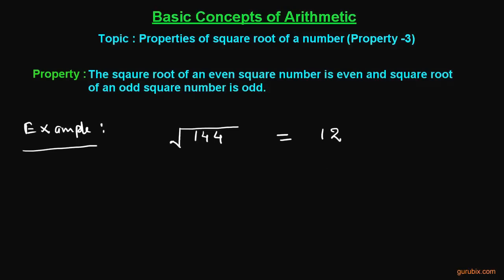So this proves that the square root of an even square number is even. Now suppose we have a number 169. We observe that this number is odd, and if we find the square root of 169, we get 13. We observe that 13 is an odd number.